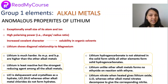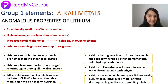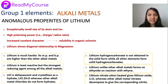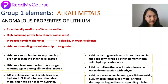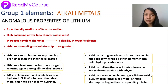Lithium nitrate when heated gives lithium oxide, whereas other alkali metal nitrates decompose to give the corresponding nitrite. Lithium shows a diagonal relationship with magnesium, which we will discuss next. To summarize: lithium has exceptionally small size with high polarizing power, is much harder with higher boiling and melting points, and is the least reactive yet strongest reducing agent among the alkali metals.